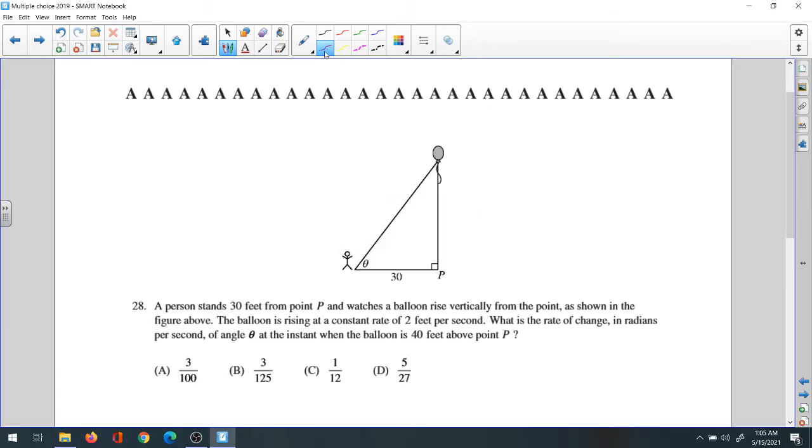Question 28: A person stands 30 feet from point B and watches a balloon rise vertically from the point as shown in the figure above. The balloon is rising at a constant rate of 2 feet per second. What is the rate of change in radians per second of the angle theta? The balloon goes up this way, and when you observe from here, the angle changes. We want to find the rate of change of this angle when the balloon is at height 40. This will be an easy related rate problem.